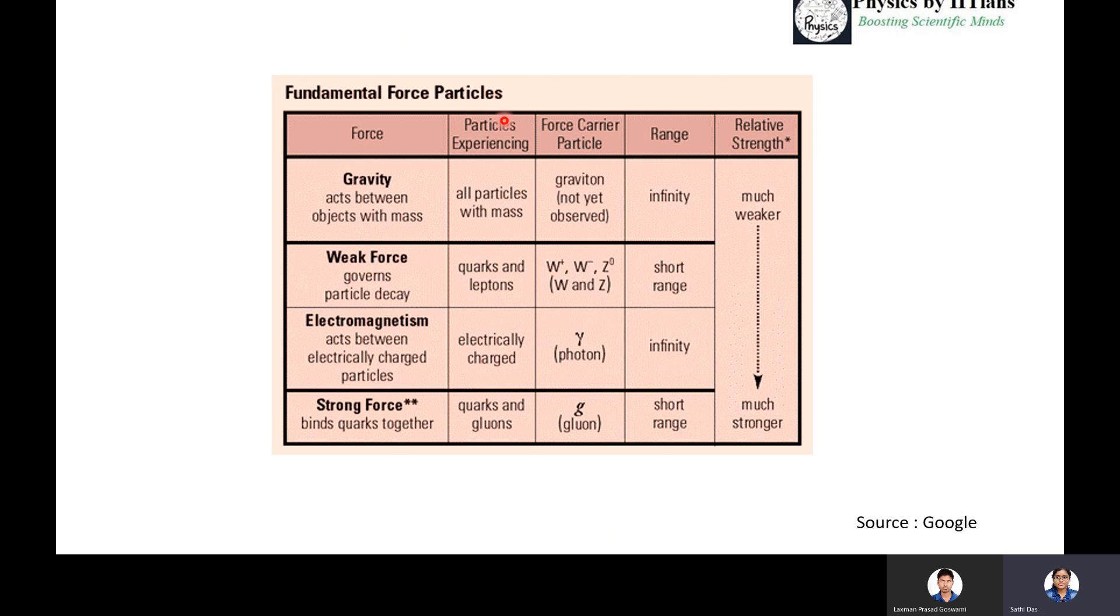What are the four fundamental forces? Gravity, weak force, electromagnetism, strong force. Gravity force carrier particle is graviton. Weak force carrier particles are W bosons and Z bosons. Particles experiencing that are quarks and leptons. Electromagnetism acts between electrically charged particles. The force carrier particle is gamma, that is the photon. Strong force, like gluon, is the force carrier particle. This is the short range force. The particles experiencing that, like quarks and gluons, are all experiencing strong force.